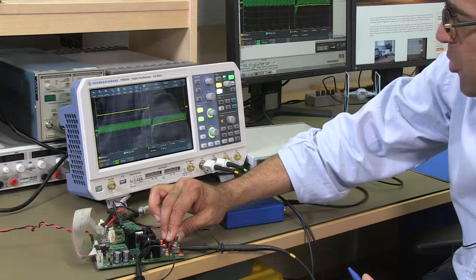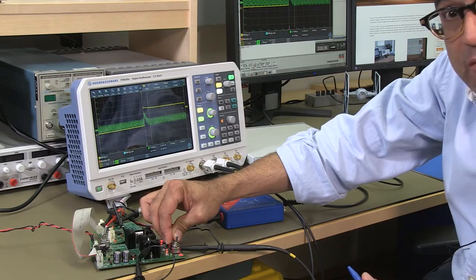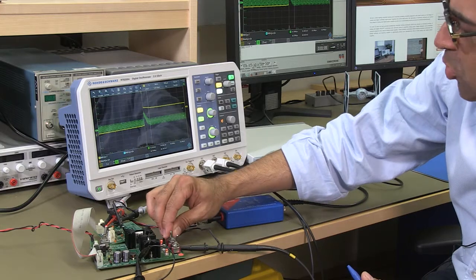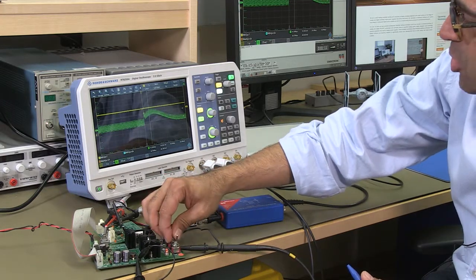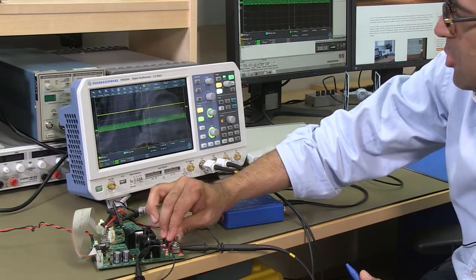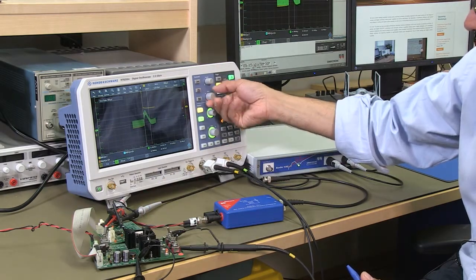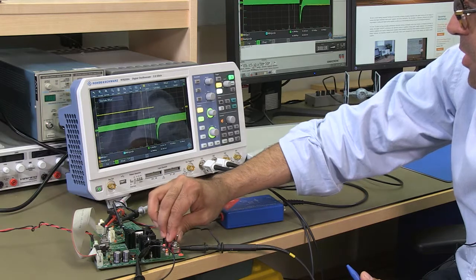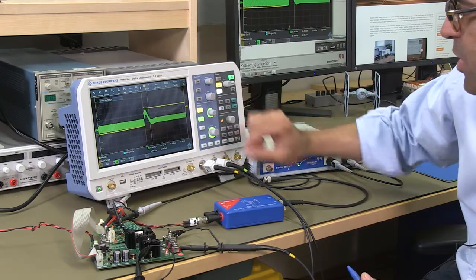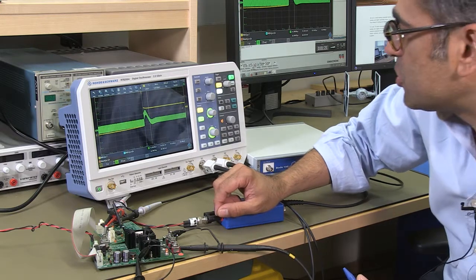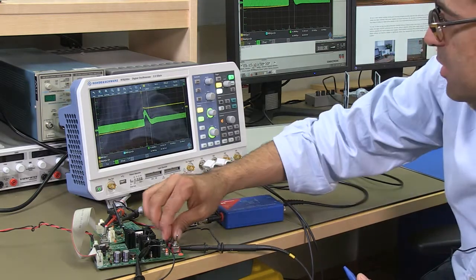This is in continuous conduction mode and of course there's no ringing because I have got very good phase margin the way this has been designed. Now, if I take some load off and get the power supply in discontinuous conduction mode and I start doing the load step again you will notice that actually the whole thing slows down quite significantly to almost 500 microseconds.